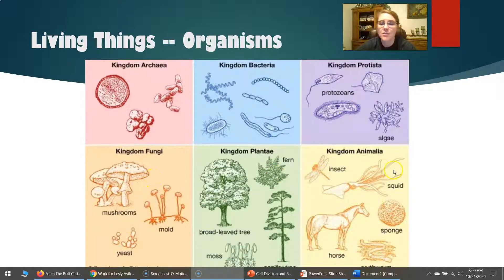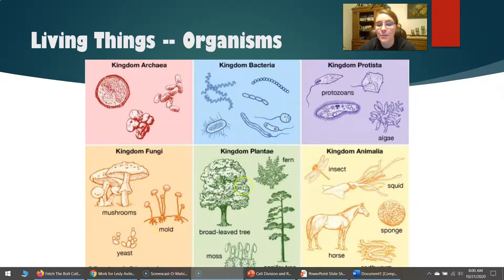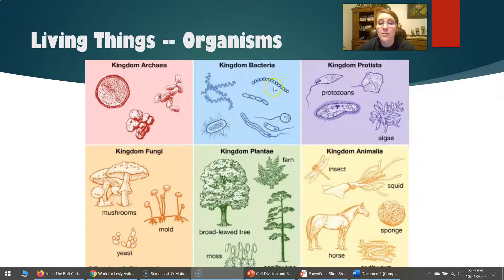Then we get to the kingdoms Fungi, Plantae, and Animalia — those are funguses, plants, and animals. Kingdom Fungi has a lot of unicellular things, and Plantae does as well. But the animal kingdom organisms always have more than one cell. The animal kingdom is what we are part of. Some organisms just live their whole life as one single cell.